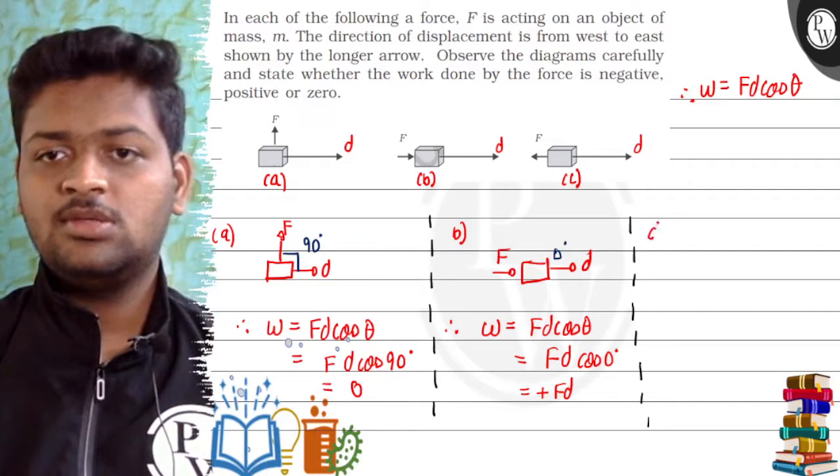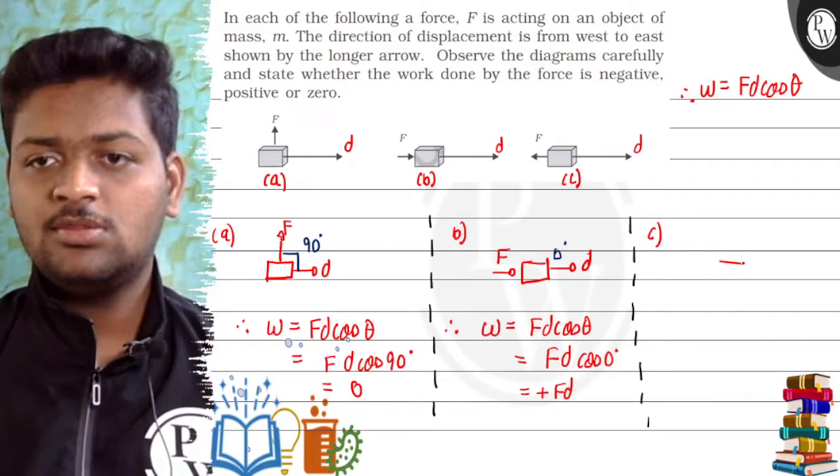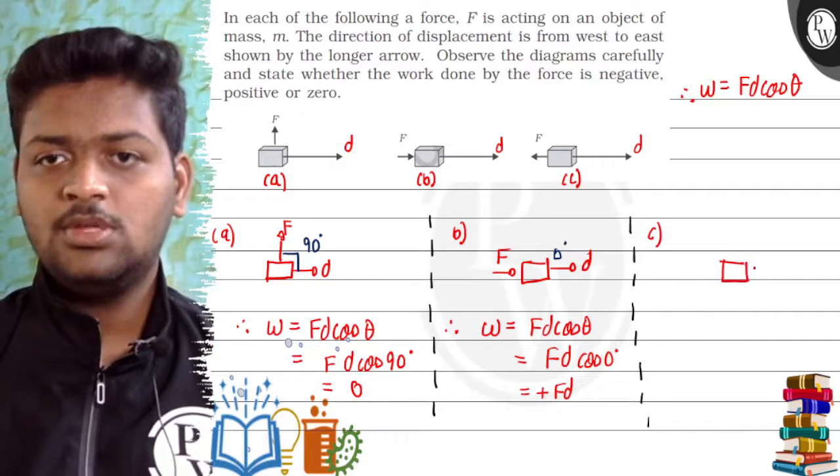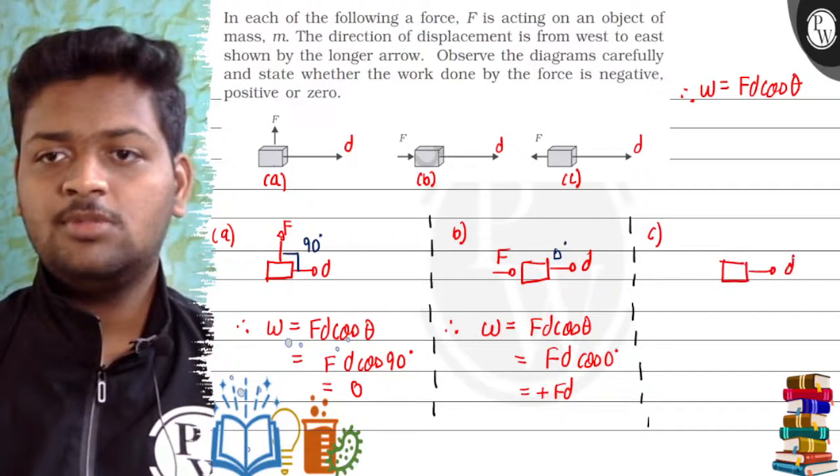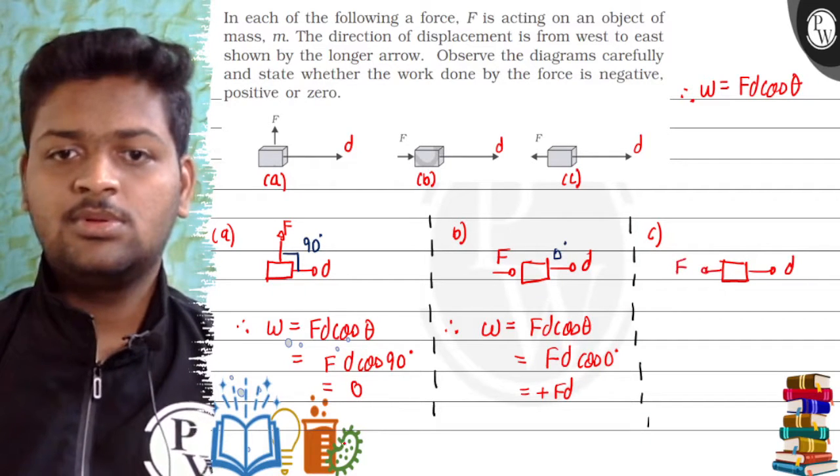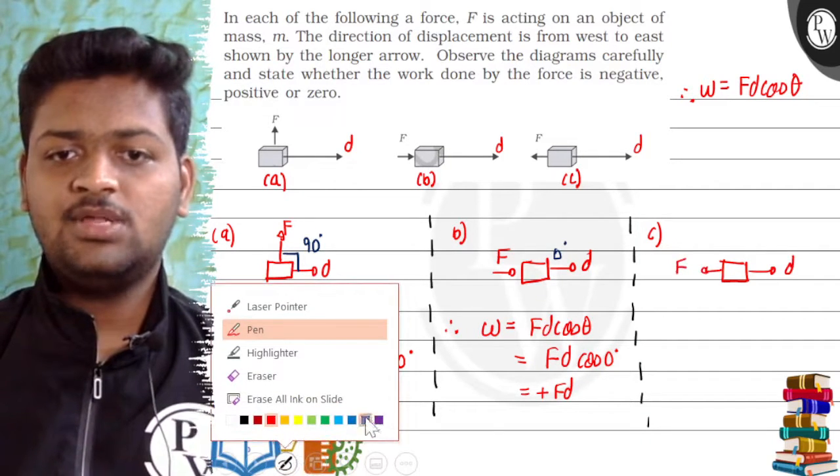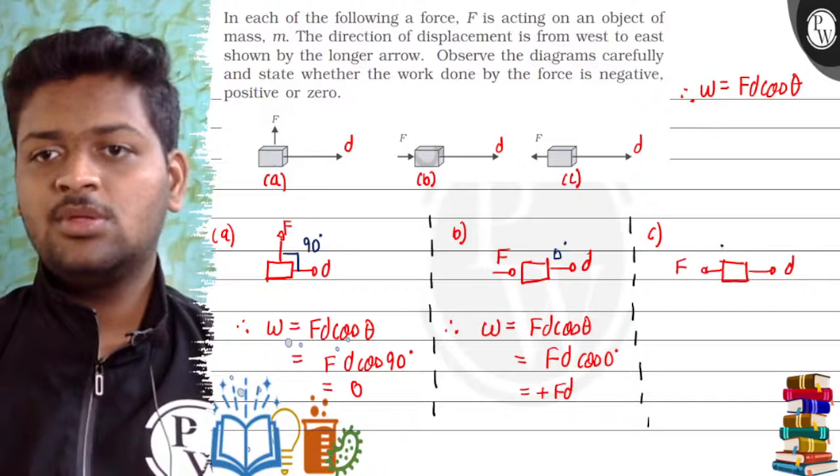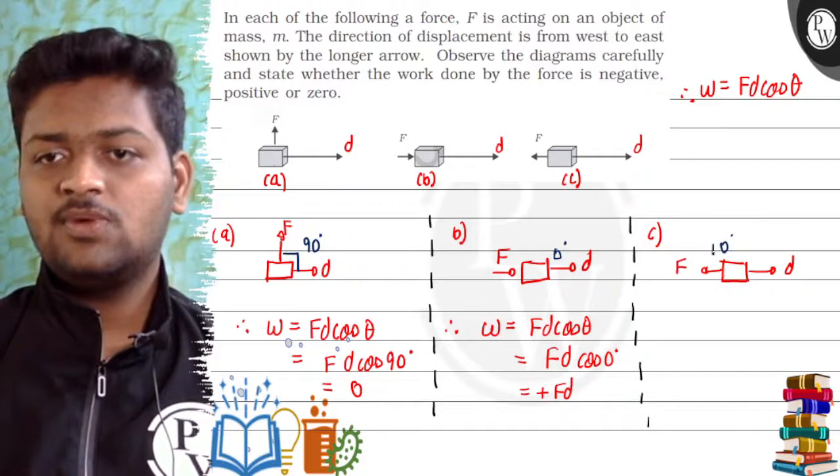Case C says there's a block. There's displacement in the forward direction and force in the backward direction. Displacement in forward direction and force in backward direction. So here the angle is 180 degrees.